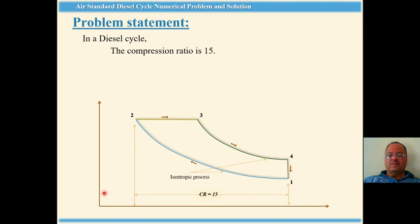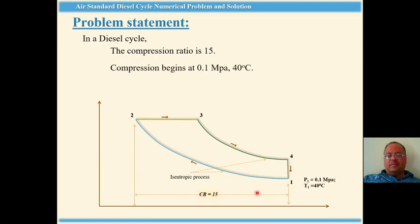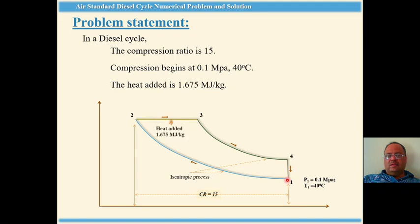The problem statement is as follows: the compression ratio V1 upon V2 is 15. Compression begins at 0.1 megapascal and 40 degrees centigrade — that is the initial condition, corresponding to point 1 in this cycle. Total heat added during process 2 to 3, which is the constant pressure process in the diesel cycle, is 1.675 megajoule per kg of air.